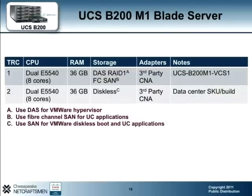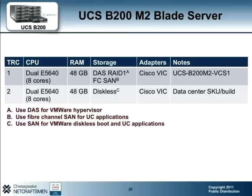There are two TRCs for the B200M1 blade server. Both TRCs include two quad-core CPUs for a total of eight cores, 36 GB of RAM, and a third-party converged network adapter. The difference is that TRC1 uses a local DAS to load the hypervisor, while TRC2 supports a boot-from-SAN option, which requires ESXi 4.1 or later. TRC1 has a bundled Cisco part number. UC application co-residency is supported. There are also two TRCs for the B200M2 blade server, both with two quad-core CPUs and 48 GB of RAM, with the same DAS vs. boot-from-SAN distinction.